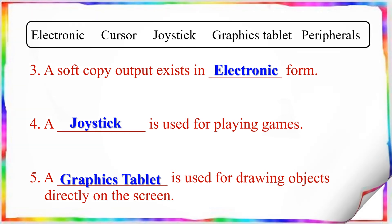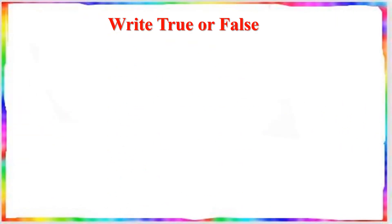Next, we are going to learn write true or false. Question number 1: Keyboard is a pointing device.